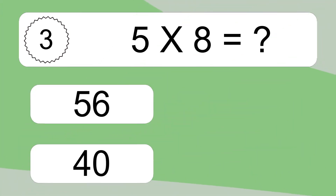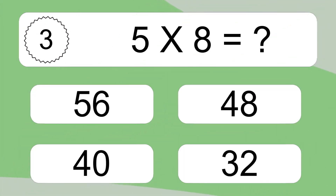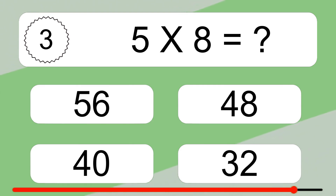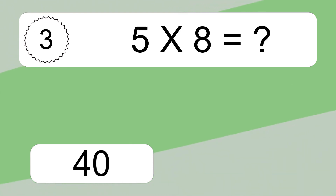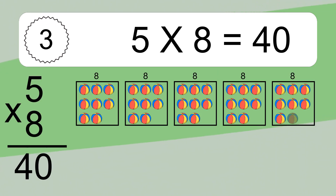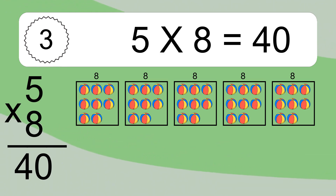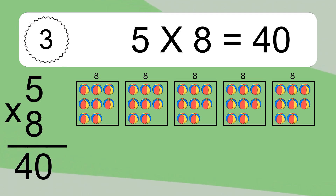5 times 8 equals what? 5 times 8 equals 40. We have 5 boxes, and each box has 8 colorful balls inside. If you count all the balls in all the boxes together, you will have 5 times 8 balls. This equals 40 balls.